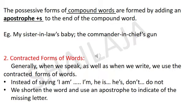The possessive forms of compound words are formed by adding an apostrophe plus S to the end of the compound word. For example: 'my sister-in-law' is the compound word — to make it possessive we write 'my sister-in-law's baby,' putting apostrophe S after 'law.' Another example: 'the commander-in-chief' is the compound word — to make it possessive you write 'the commander-in-chief's gun.' Hope it is clear children.